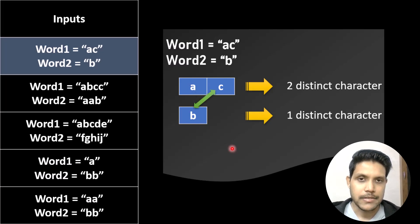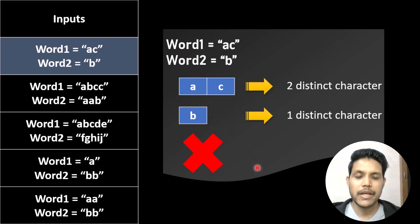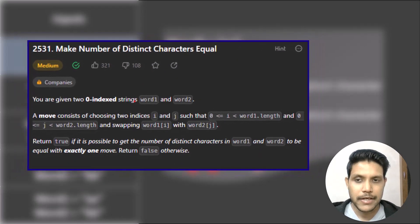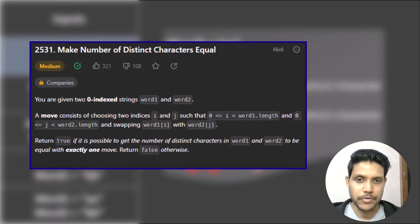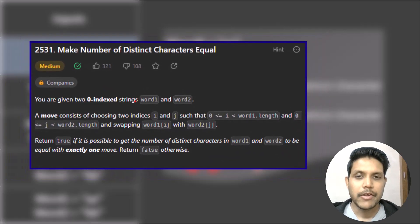Choosing index 1 from word1 and index 0 from word2, we swap again but the number of distinct characters are still unequal. Having exhausted all possibilities, it is not possible to make the number of distinct characters equal by exactly one move. Remember, the problem clearly states we need to make exactly one move — meaning even if the counts are equal at the start, we still need to make one move and then check.